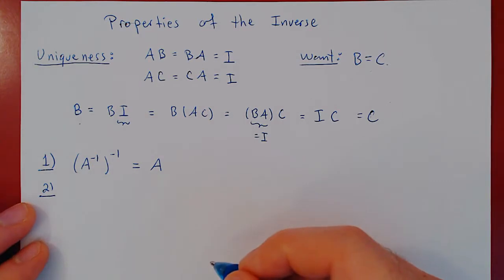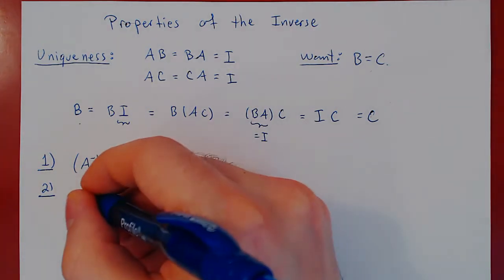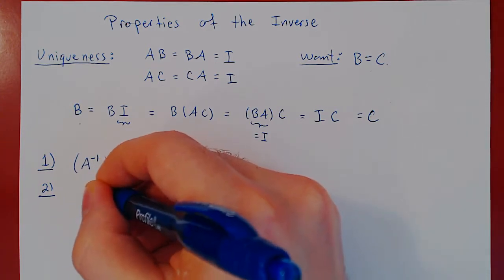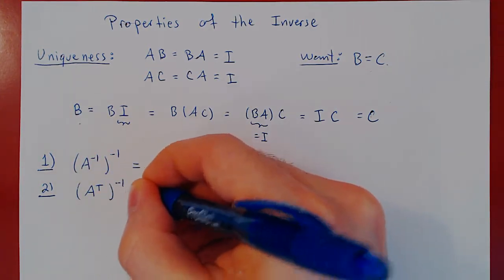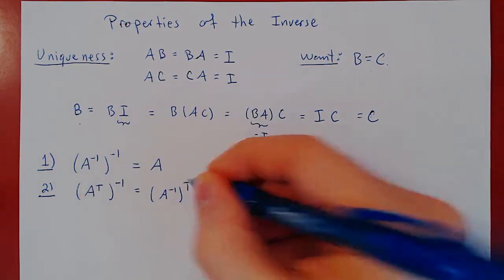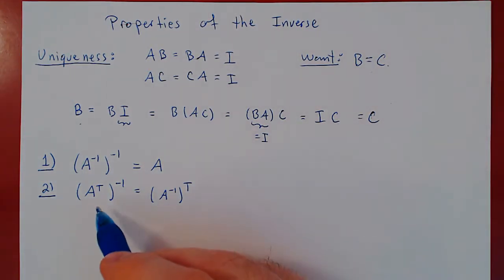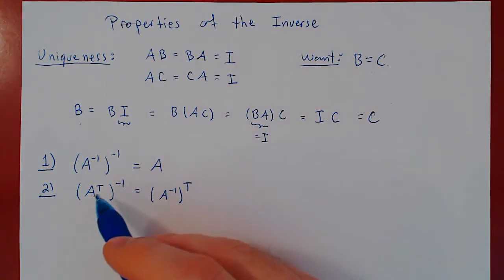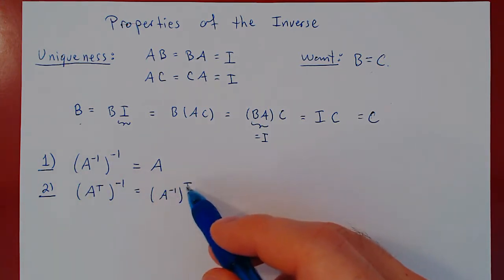Property two: if A is invertible, is its transpose invertible? The result is: if A is invertible, A transpose is also invertible, and the inverse of A transpose happens to be the transpose of A inverse. So if you have found the inverse of A and ask what is the inverse of the transpose, simply take your inverse and transpose it.